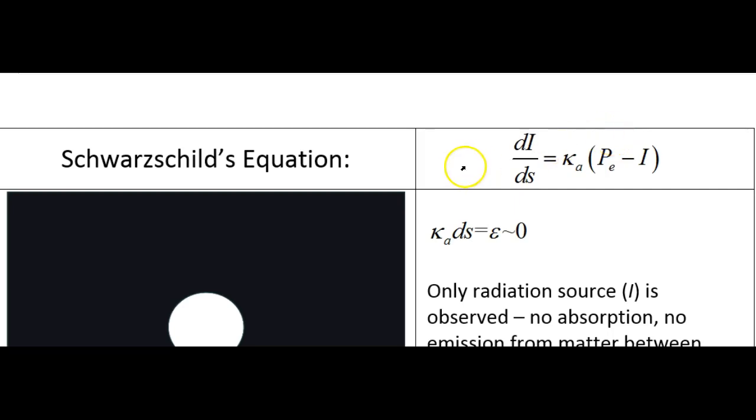Look at Schwarzschild's equation. The dI/ds is the change in radiance over distance. Kappa A is the atmospheric absorption coefficient in units of meters to the minus one. P sub E is the Planck distribution function spectral irradiance in that same direction, and I is the radiance of the source.